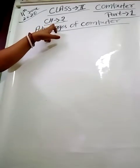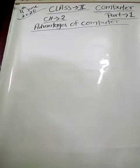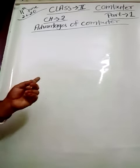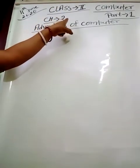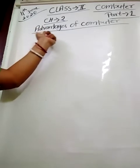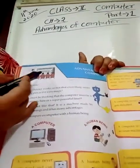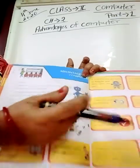So that's why I have written here chapter 2. If you open your book to page number 10 for class 2 students, chapter 2 will be started from there, and you can see the name of that chapter — it is 'Advantages of Computer.' What are the advantages of computer? You can see chapter 2, advantages of computer.